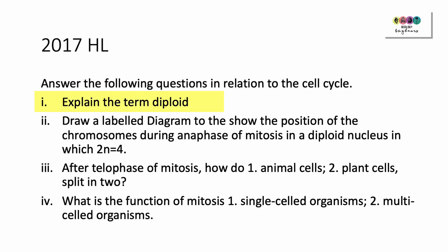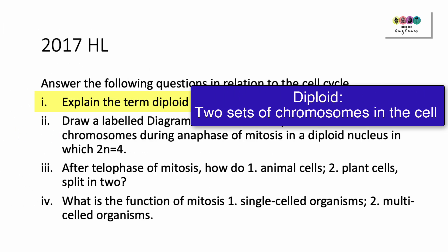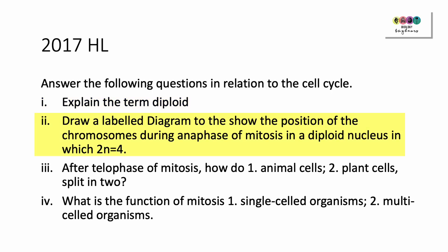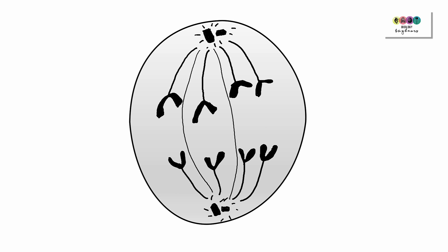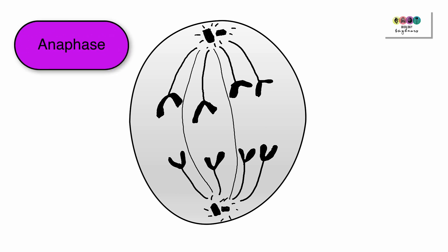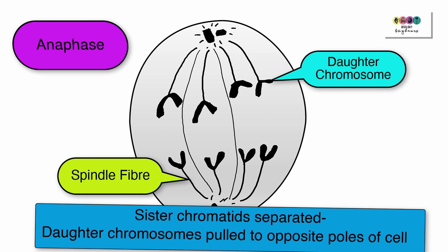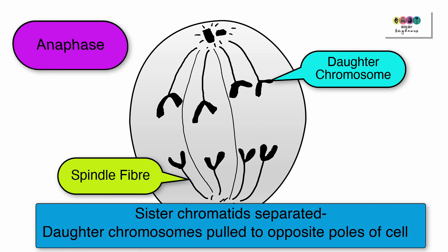2017: Explain the term diploid — diploid means two sets of chromosomes in the cell or in the nucleus of the cell. Draw a labelled diagram to show the positions of the chromosomes during anaphase of mitosis in a diploid nucleus in which 2n equals four. Here's your sketch: this cell is in anaphase because the chromosomes have been separated — those sister chromatids have been separated and are now daughter chromosomes. Four of them are being pulled to one pole and the other four to the opposite pole.